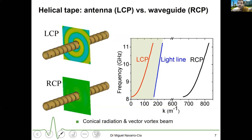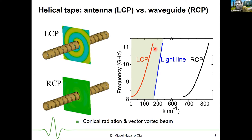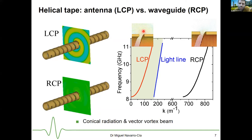We performed a dispersion diagram study to confirm this. For the left-handed polarization, the dispersion is within the light cone, which explains why the structure works as an antenna. For right-handed circularly polarized light, the band is beyond the light cone and it is a confined mode. Plotting the electric field confirms that for left-handed polarization the mode is leaking - it's a leaky antenna mode - while for right-handed polarization the mode is confined at the surface, analogous to a surface wave or surface plasmon.